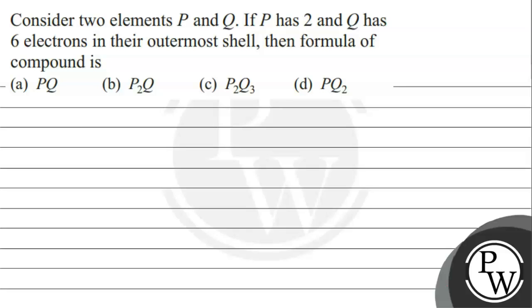Hello. Let's fix this question. The question says: consider two elements P and Q. P has two and Q has six electrons in their outer shell. Then the formula of the compound is?